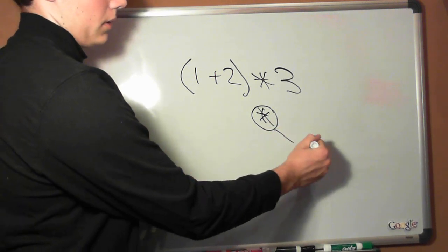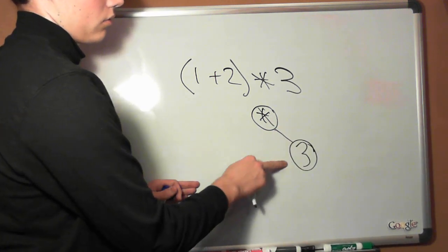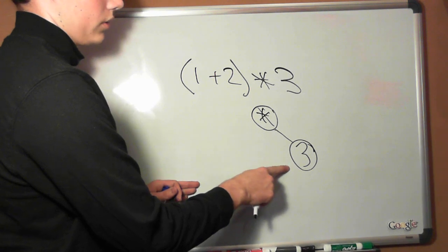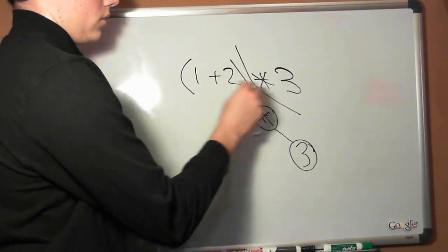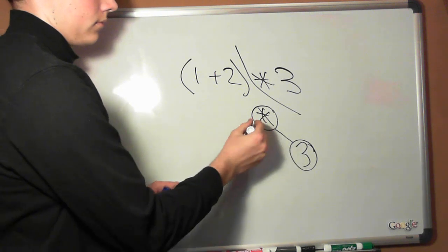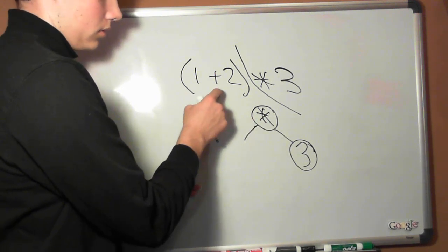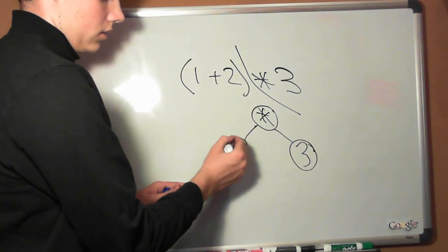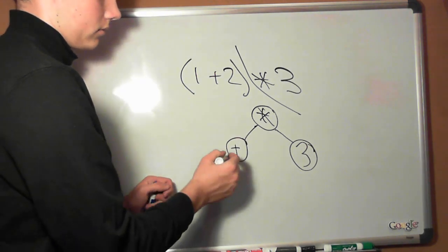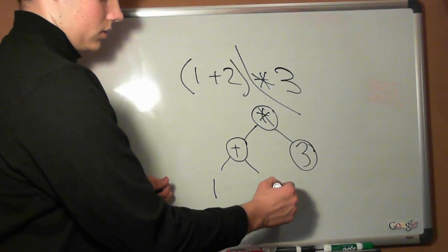Then we're going to append the 3 down to the right as our right subtree. Then we're left with 1 plus 2. This plus symbol is going to be extracted and placed there: 1, 2.